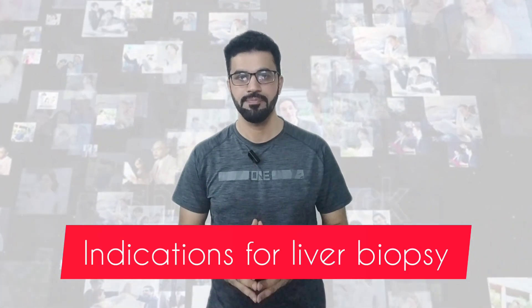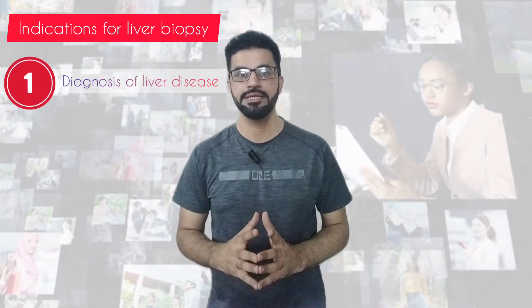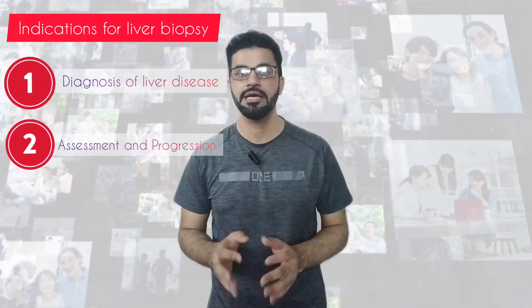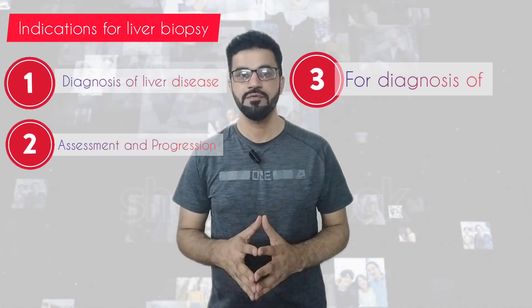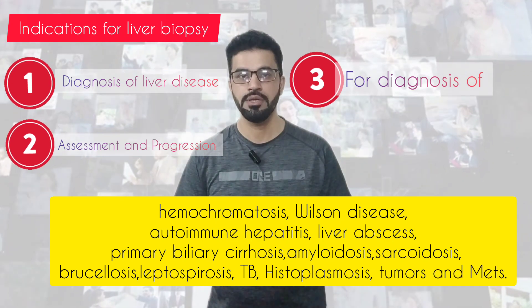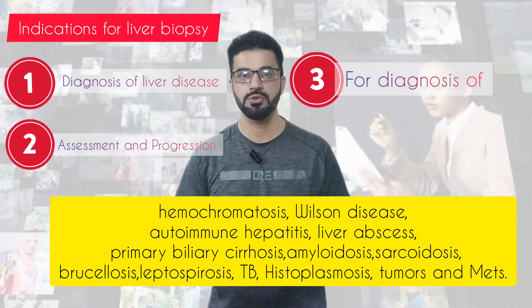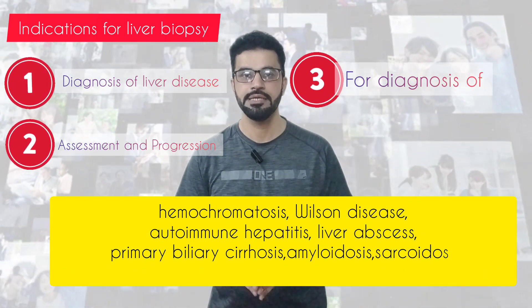Today I am giving a brief description about liver biopsy needles. Indications for liver biopsy: number one, diagnosis of liver disease where other tests do not reveal etiology; number two, for the assessment and progression of disease; number three, for diagnosis of hemochromatosis, Wilson disease, autoimmune hepatitis, liver abscess, primary biliary cirrhosis, amyloidosis, sarcoidosis, brucellosis, leptospirosis, TB, and histoplasmosis.